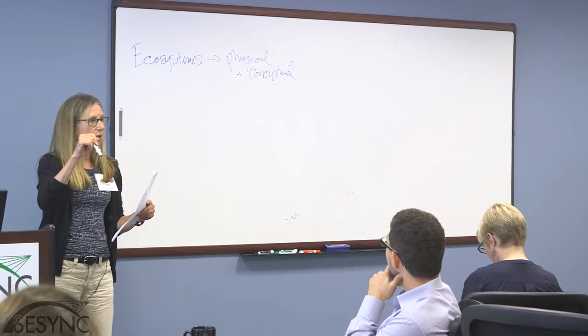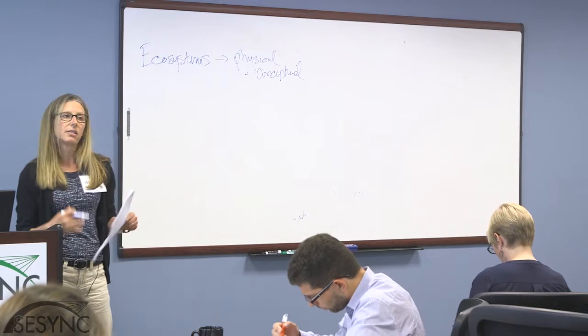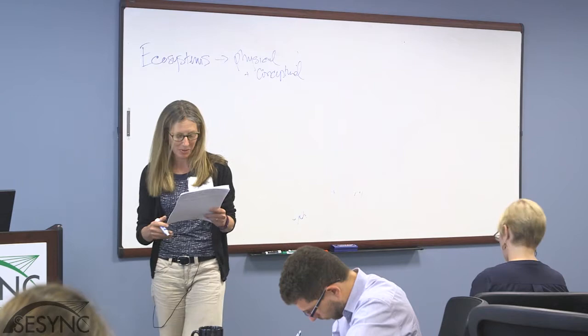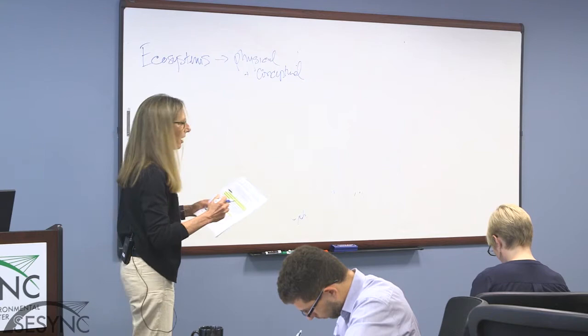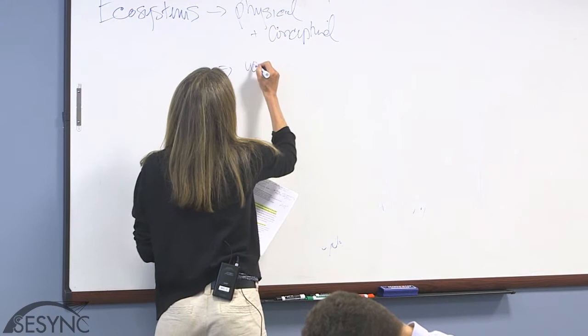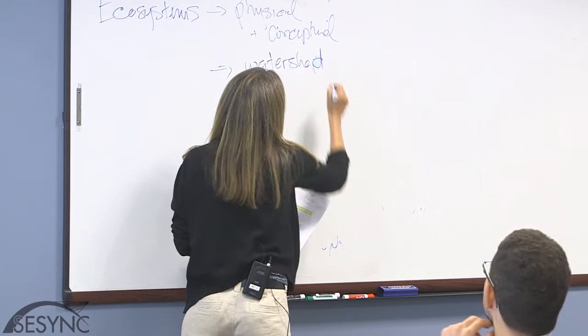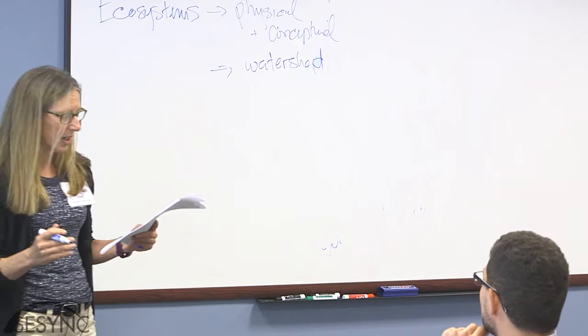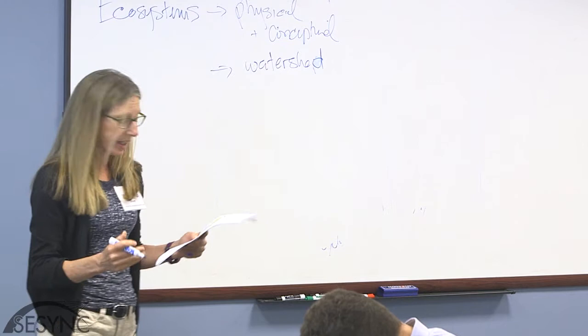Yellowstone National Park is a classic landscape that's been well studied. Most terrestrial ecosystem ecologists define ecosystems as a watershed, though there are other ways of defining them. Watershed boundaries are distinct and common. In aquatic systems, ecosystems tend to be lakes, ponds, pools, river reaches, or similar designations. Being a terrestrial ecosystem ecologist, most of my examples come from land, but the same concept applies elsewhere.